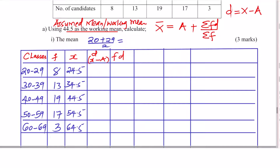Now we get D. How do you get D? We take x and subtract the working mean. For the first: 24.5 minus 44.5 gives negative 20. The second: 34.5 minus 44.5 gives negative 10. Then 44.5 minus 44.5 gives 0. Then 54.5 minus 44.5 gives 10. And 64.5 minus 44.5 gives 20.